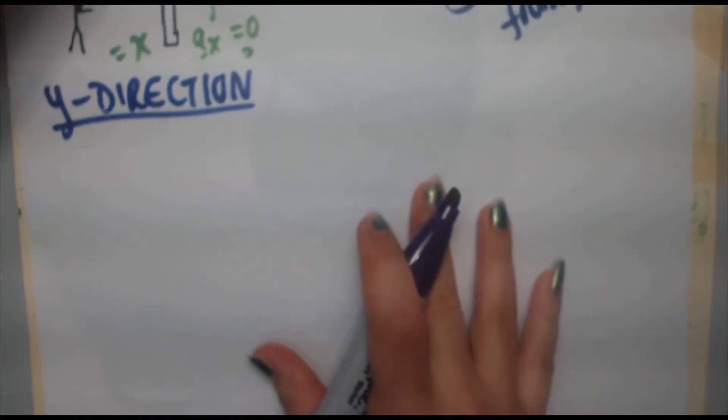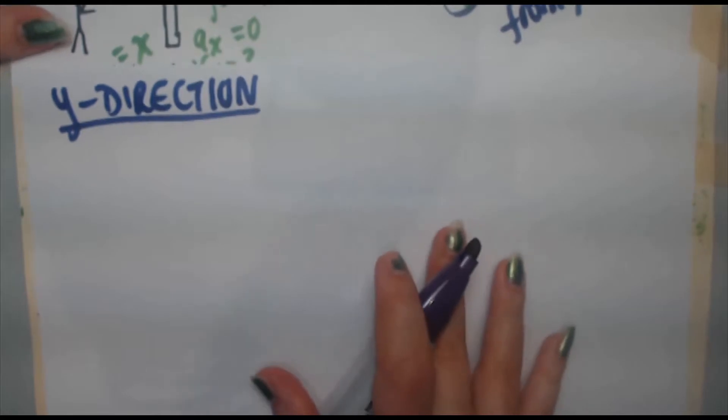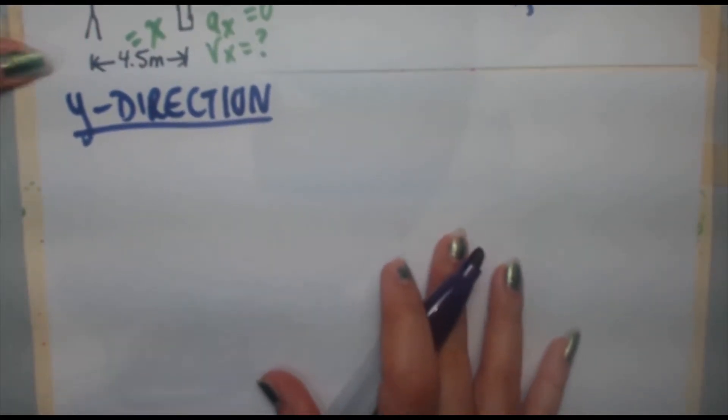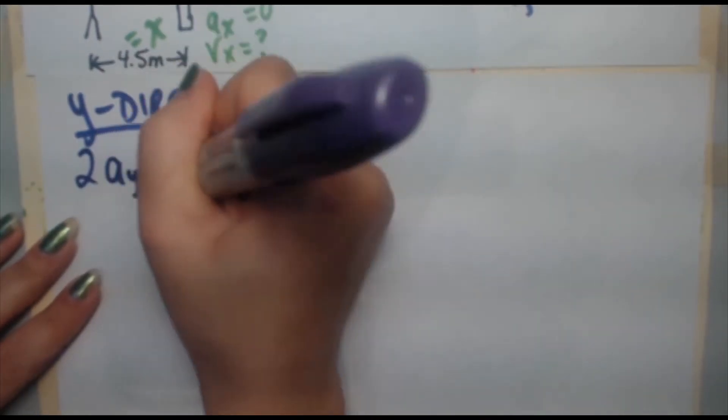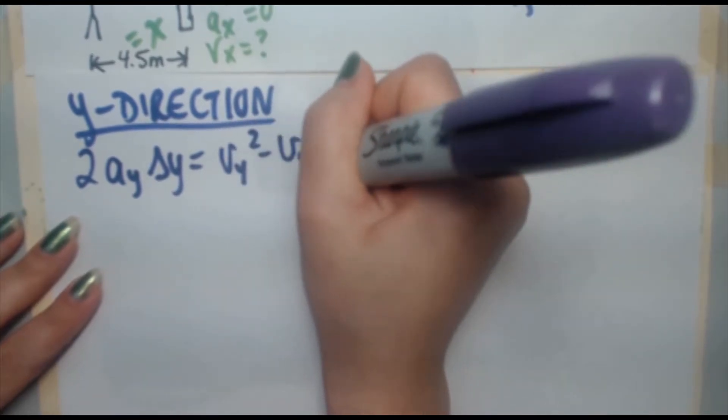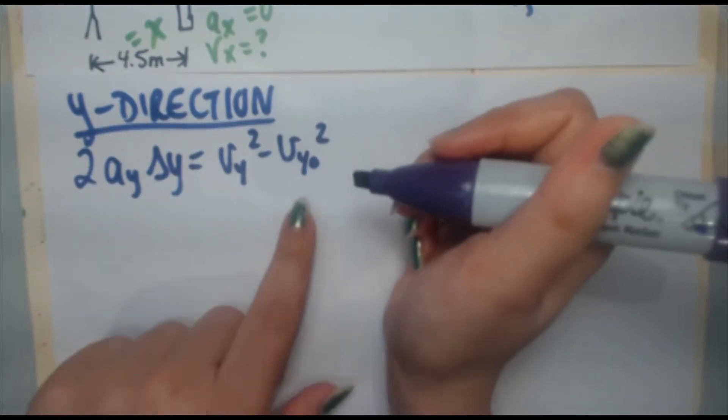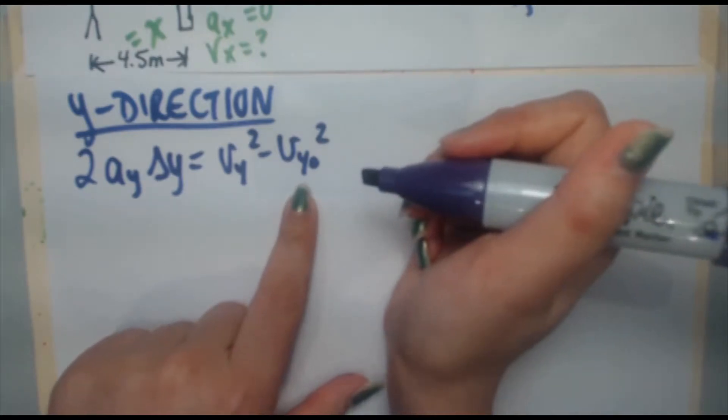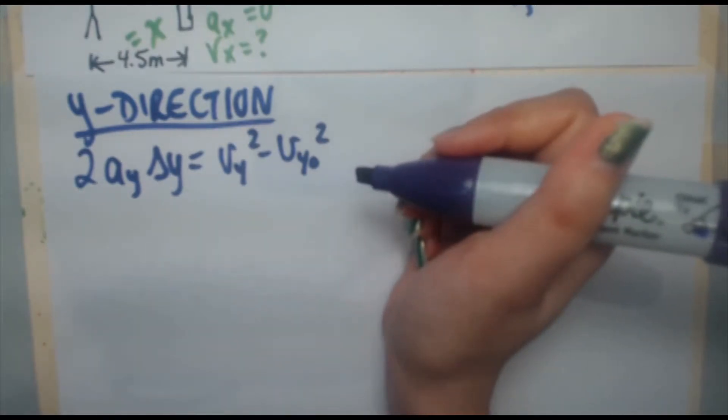The more variables you find, the easier it will be to solve your problem. We can use this kinematics formula: 2ayΔy = vy² - vy₀². We know everything here except vy₀. So let's determine that.